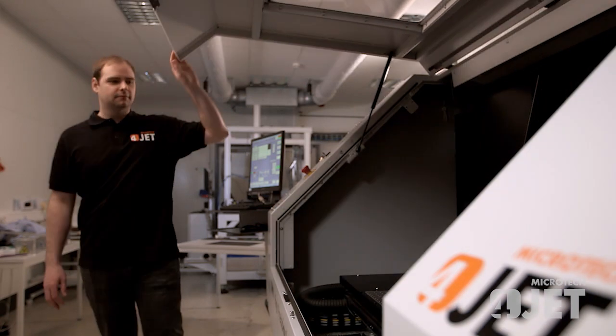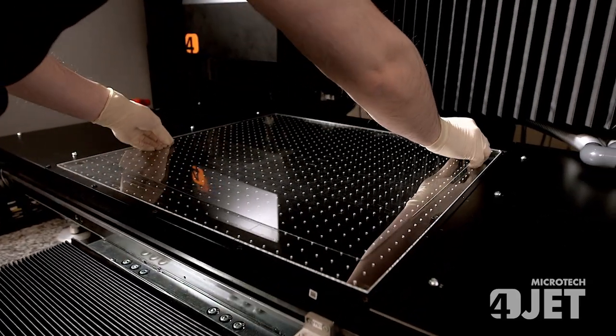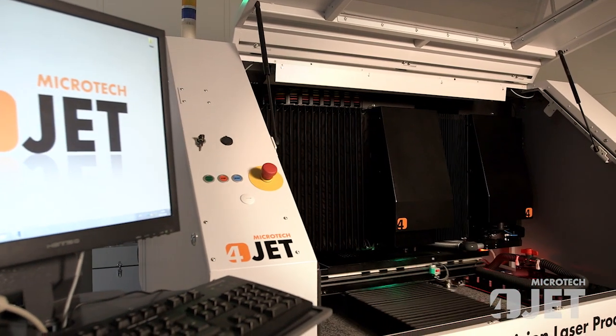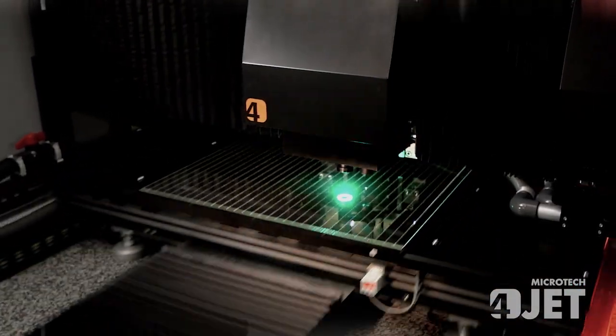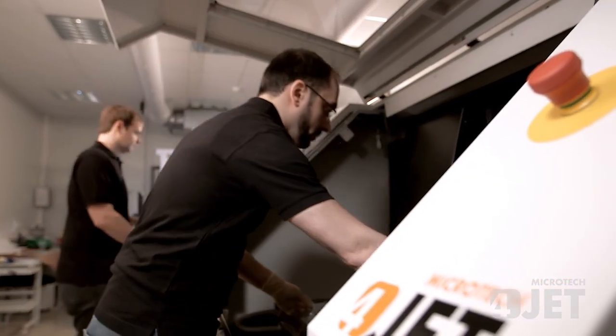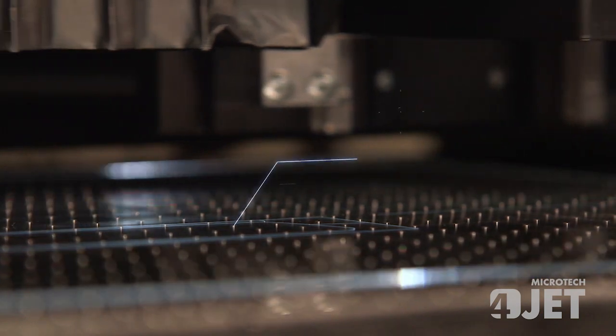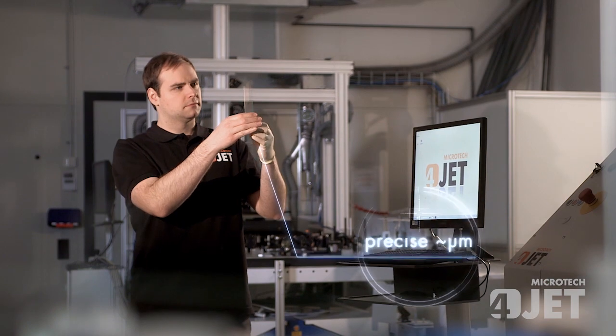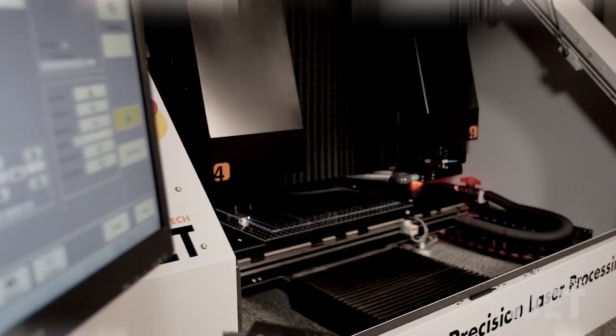From micro components all the way up to large-size panels, ultra-short laser pulses and dedicated beam shaping of the highly dynamic Twin platform ensure that the substrate is cut with the highest precision at cutting speeds of about one meter per second. The Twin system maintains an accuracy level of just a few micrometers.